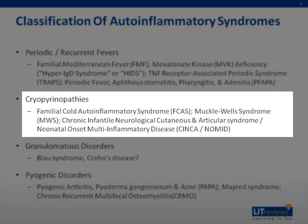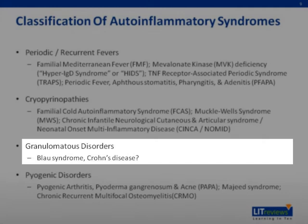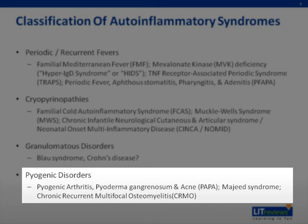The second group consists of the cryopyrinopathies, with three disorders: Familial Cold Autoinflammatory Syndrome, Muckle-Wells Syndrome, and the chronic infantile neurological cutaneous and articular syndrome, also known as neonatal onset multi-inflammatory disease or NOMID. The third group of granulomatous disorders includes Blau syndrome, and some investigators include Crohn's disease in this category. The fourth group, pyogenic disorders, includes pyogenic arthritis, pyoderma gangrenosum, and acne (PAPA), then Majeed syndrome, and finally CRMO, or chronic recurrent multifocal osteomyelitis.